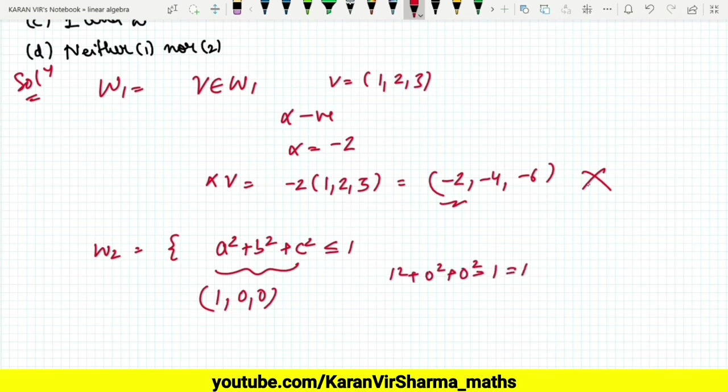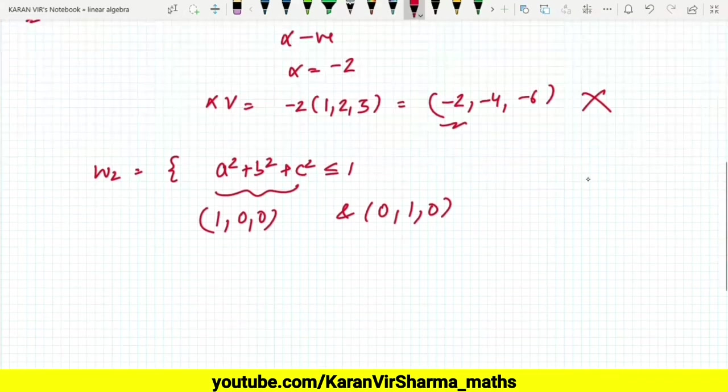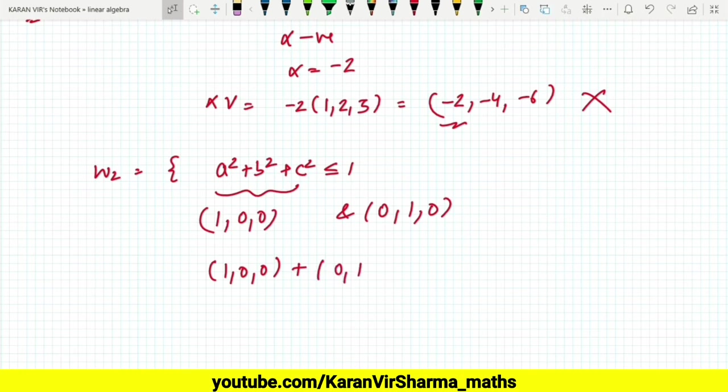And similarly (0,1,0) also belongs to this. But it must be closed under addition. So when you add these two vectors, what you will be getting is (1,1,0).